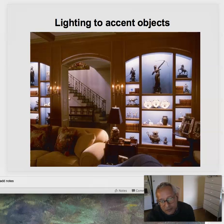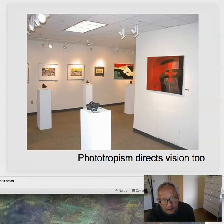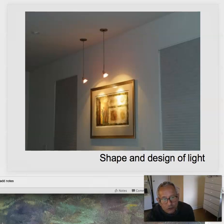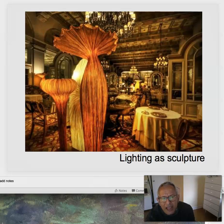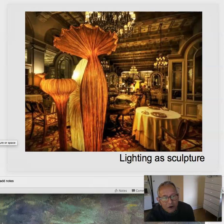Lighting to accent objects. This may or may not be something that happens in your space, but you can create real drama by lighting objects. We're pulled towards light, so that directs our vision. Here's a fairly effective lighting of a piece of artwork with fairly minimal means. And then we have lighting as sculpture and shape — there are wonderful things we can do with self-illuminating fixtures. There are really no limits to what we can do with this.